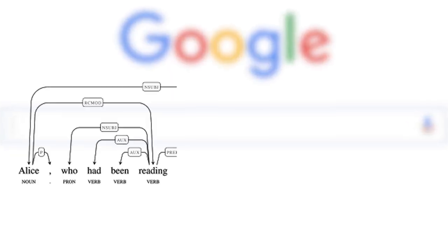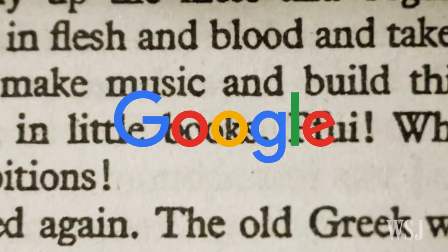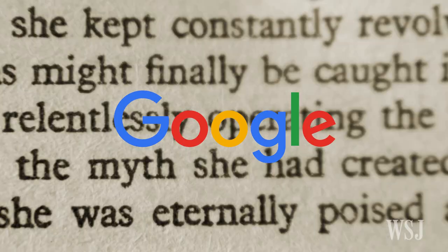But Google says this is only the first step for Parsi McParseface. The program can't figure out the relationship between sentences, a feature allowing it to understand overall context.